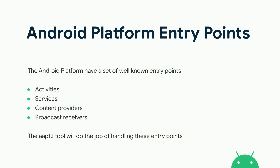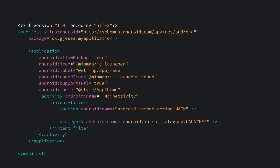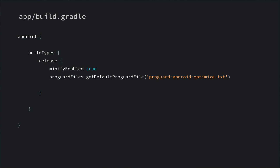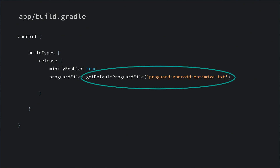Just like a standalone Java program, an Android application also has well-known entry points: your activities, services, content providers, and broadcast receivers. The AAPT tool takes care of handling these entry points. Here is a manifest file — it defines the main activity, and the AAPT2 tool will generate a keep rule to have these entry points survive. Besides these entry points generated by AAPT2, there are other things required for the Android platform, provided by Android Studio in a configuration file.